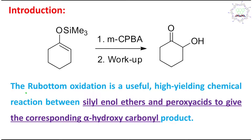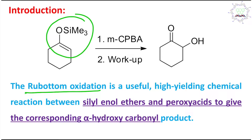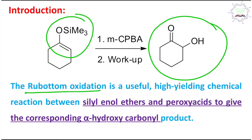What is this Rubottom oxidation? This is actually a chemical reaction. You can consider the epoxidation of silyl enol ethers. What ultimately happens is a silyl enol ether is converted or oxidized into the corresponding alpha-hydroxy ketone. This alpha-hydroxy ketone is produced by this oxidation using meta-chloroperoxybenzoic acid (MCPBA).